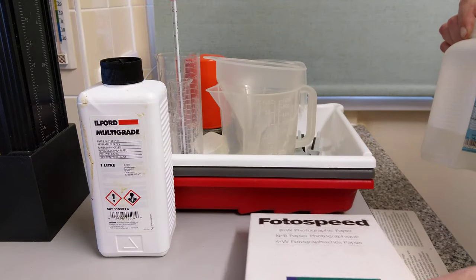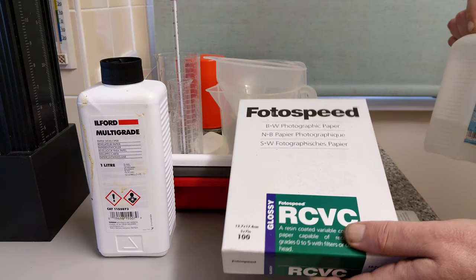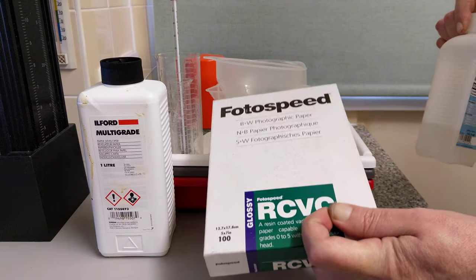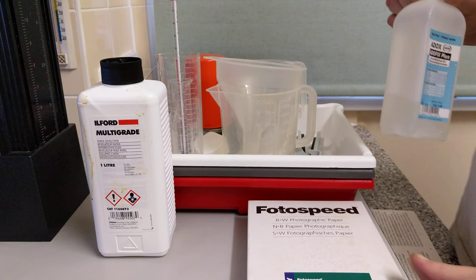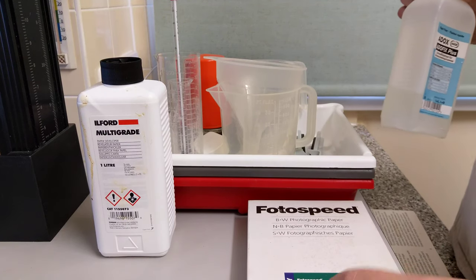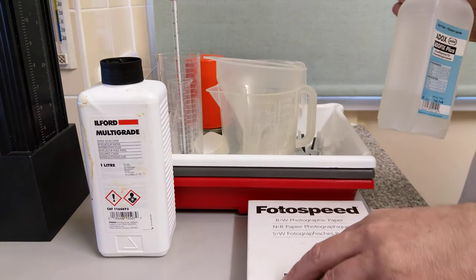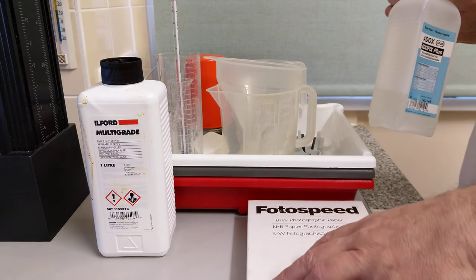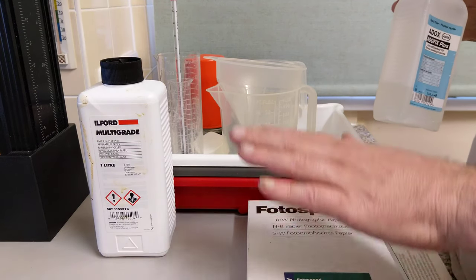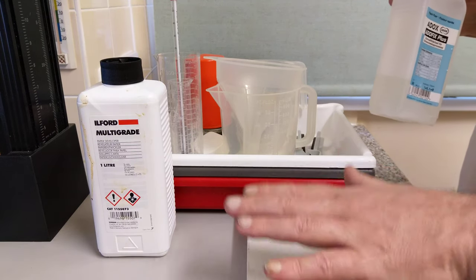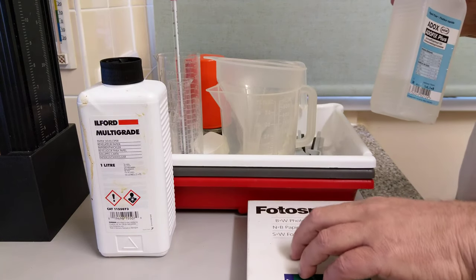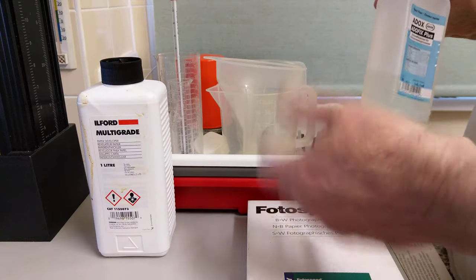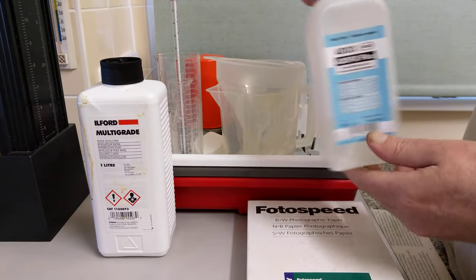This is variable contrast, so resin-coated variable contrast paper. It works fine. It's resin, so it washes fairly quick. Fiber-based papers that you can get are more expensive, but they're higher quality. But they need a lot more washing because obviously these are coated in resin so the chemicals don't actually get into the paper. They're protected. Whereas with a fiber paper, it goes all the way through the paper, so there's more washing and everything involved.